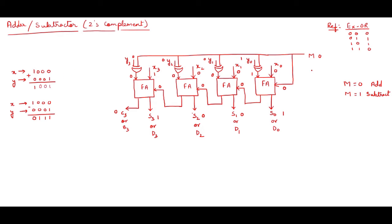Now I am changing the m bit from 0 to 1. When m becomes 1, the XOR gate outputs change: 1 XOR 1 is 0, so the y bit that was 1 becomes 0. For the other y bits that were 0: 0 XOR 1 is 1, so those become 1, 1, and 1. The x values remain the same.